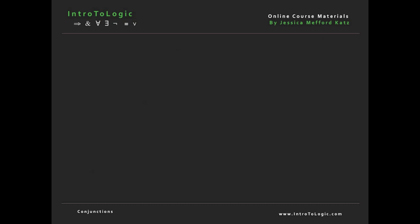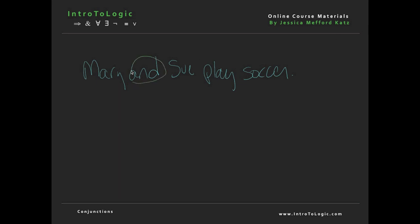Here's another example of a conjunction. The sentence 'Mary and Sue play soccer' is a conjunction. We know that because the word 'and' conjoins two full sentences. We have the conjunct Mary plays soccer, and we have the other conjunct Sue plays soccer.